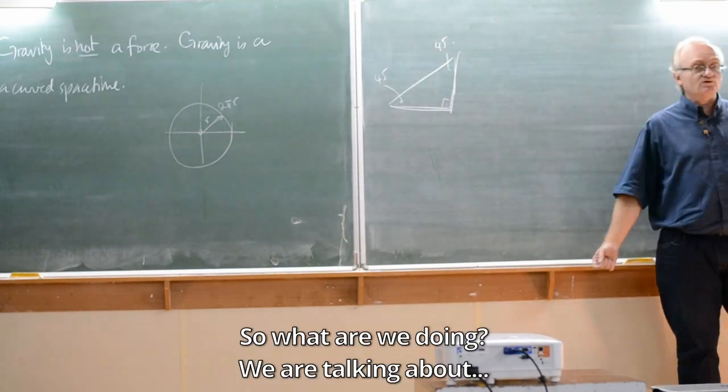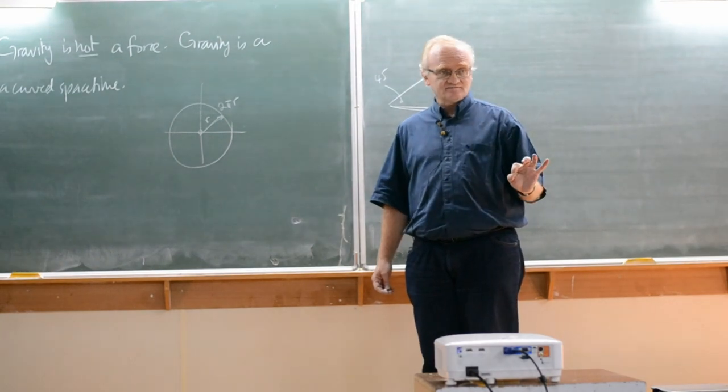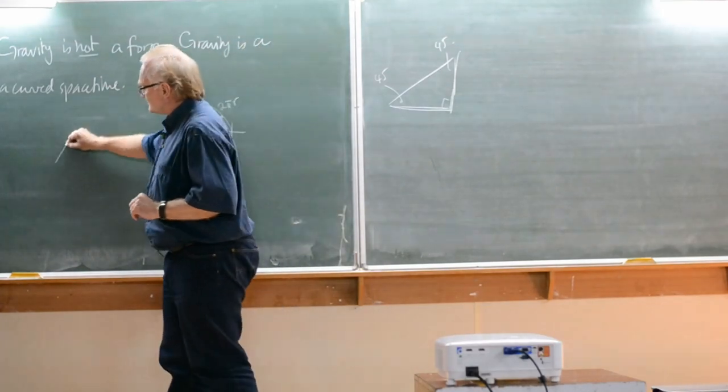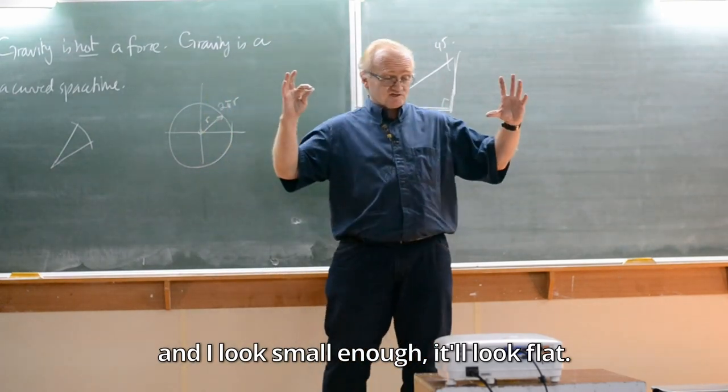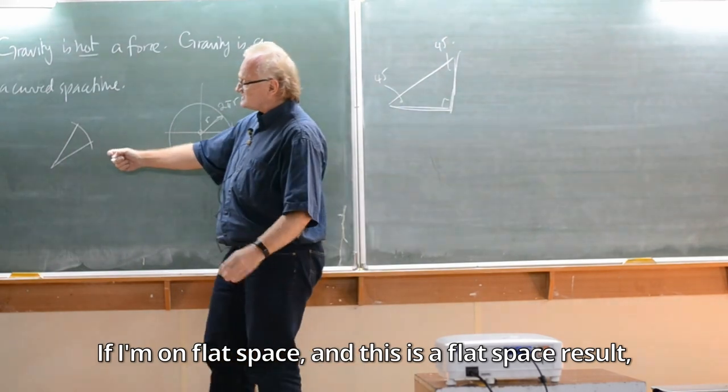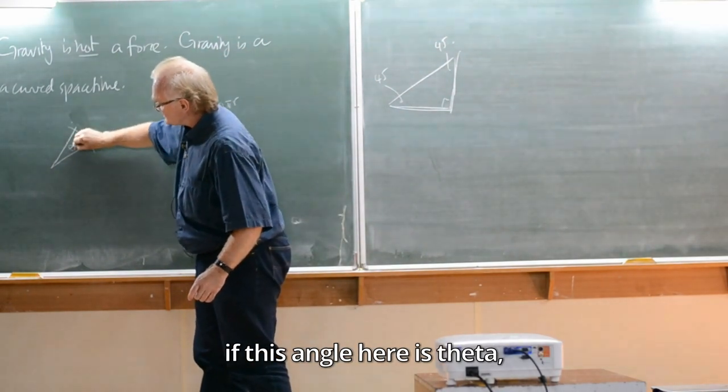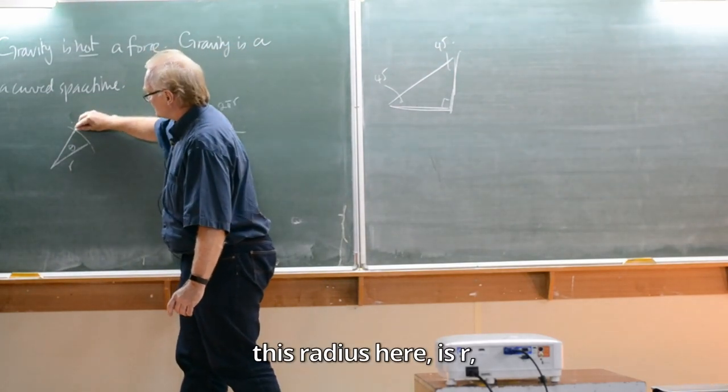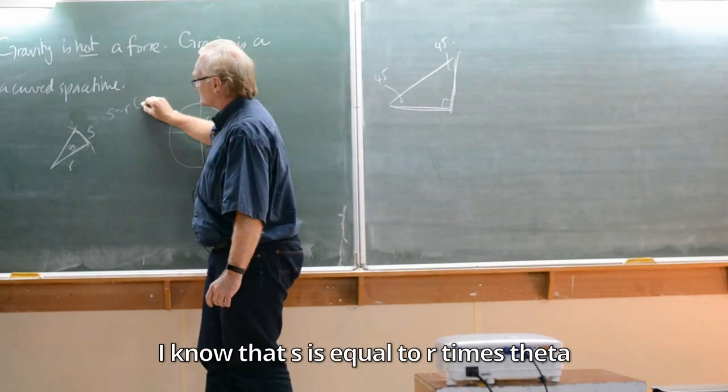So what are we doing? We're talking about angles and distances. But in actual fact we can simplify this slightly. If I'm on any space at all and I look small enough, it'll look flat. If I'm on a flat space, if this angle here is θ, this radius here is r, and this arc length is s, I know that s equals r times θ, or equivalently θ equals s over r. So I can get angles by measuring lengths.